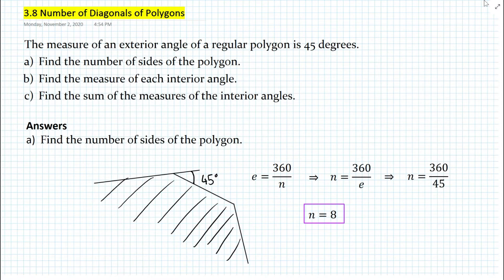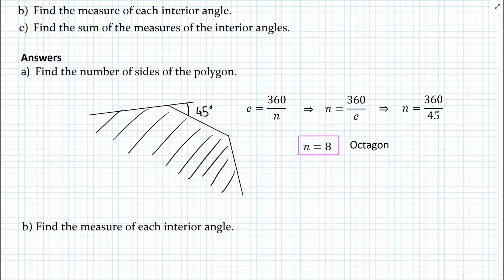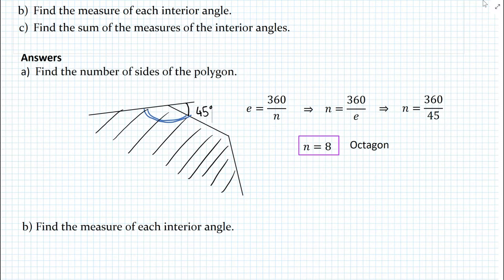So now we know that our polygon has 8 sides. This type of polygon is simply called an octagon, where 'octa' means 8. Now that we found the answer for part A, how do we find the measure of each interior angle? Well, the exterior and interior angle are supplementary because they form a linear pair. So we subtract 45 from 180 degrees.